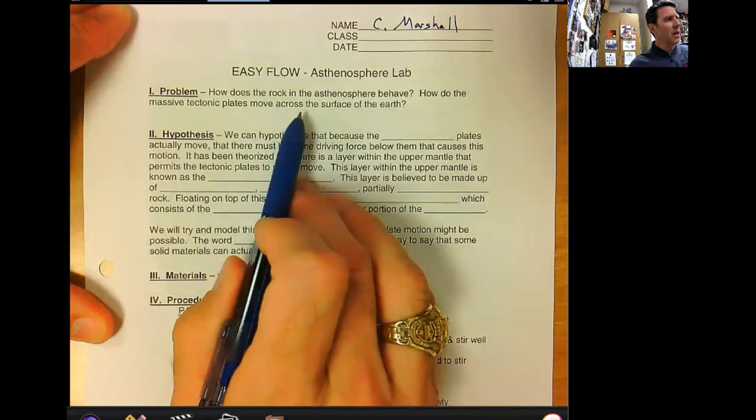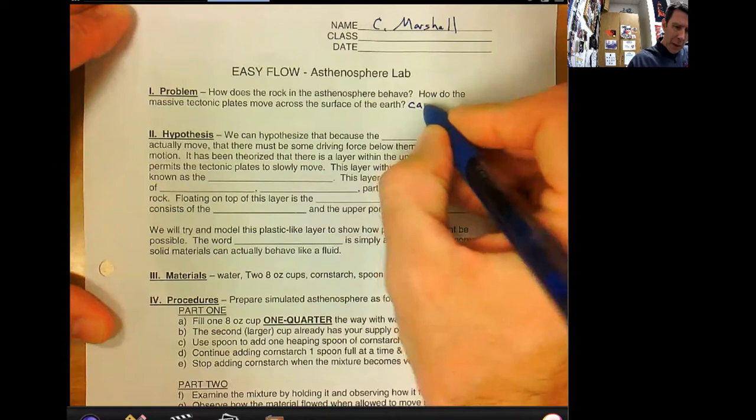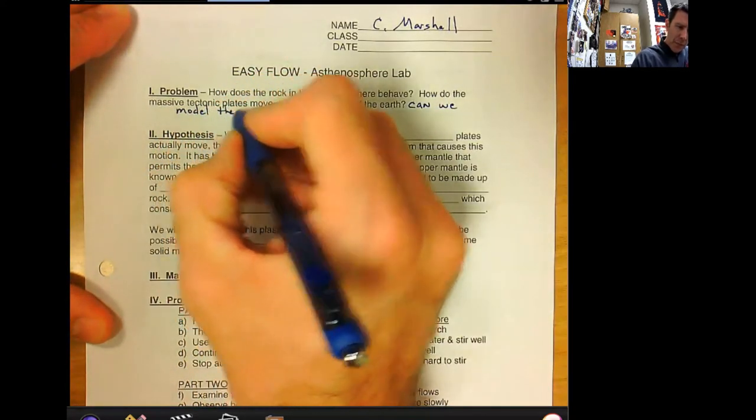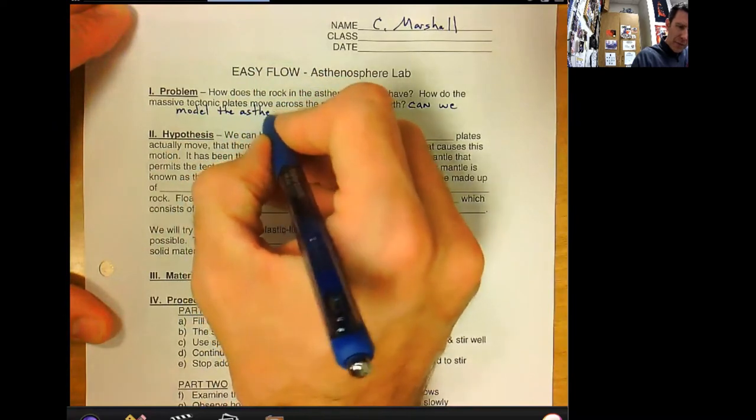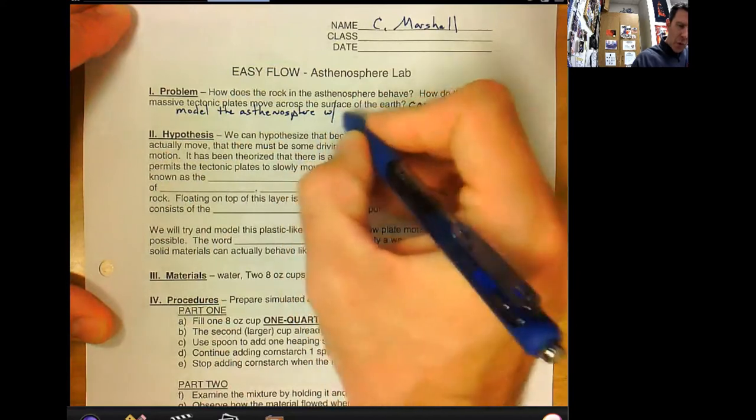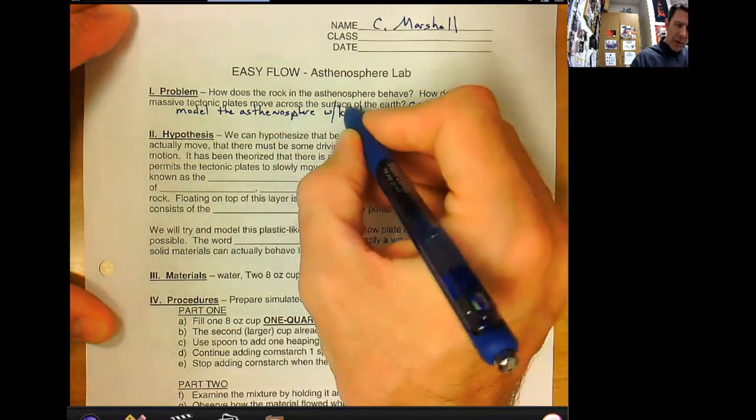The problem: the purpose, how does the rock in the asthenosphere behave? How do the massive tectonic plates move across the surface of the Earth? Can we model the asthenosphere with household kitchen materials?